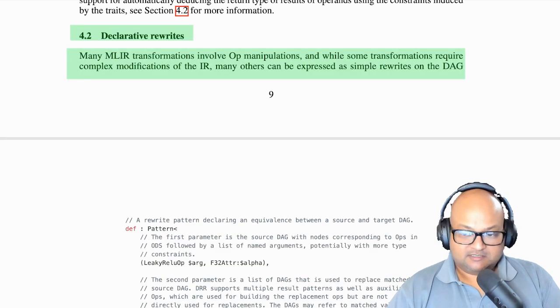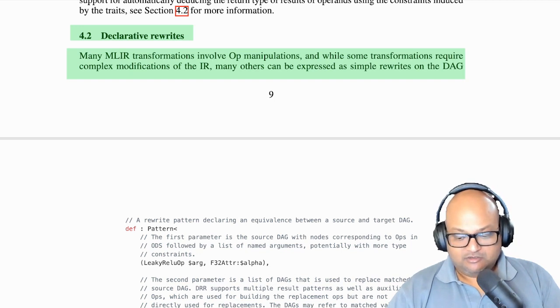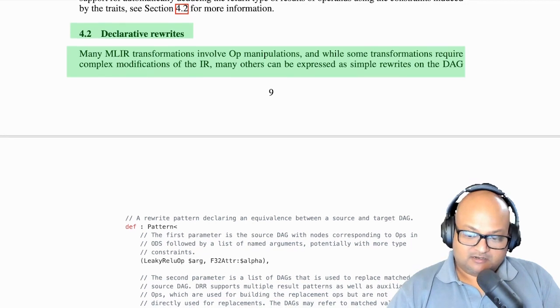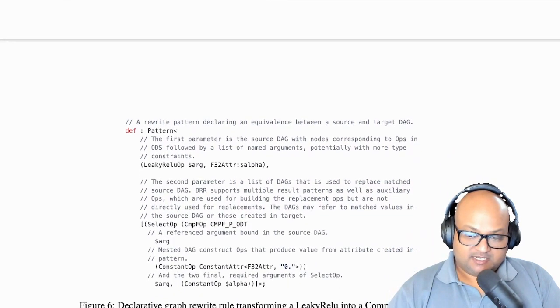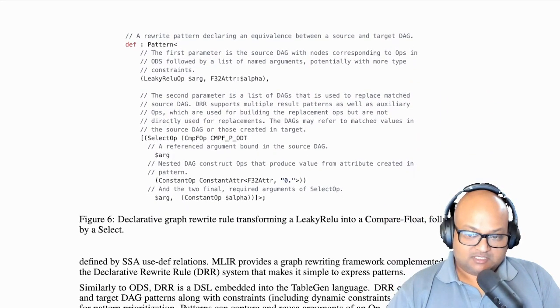One of the cool things this allows you to do is define some optimizations in a very declarative manner. Now there might be some complex global optimizations that require you to do deep manipulations on the control flow graph. But then there are many others which can be expressed almost like local rewrite rules.